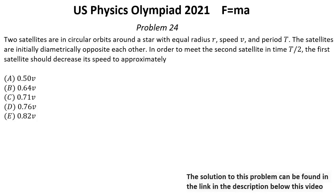Problem number 24. Two satellites are in circular orbits around a star with equal radius R, speed V, and period T. The satellites are initially diametrically opposite each other.